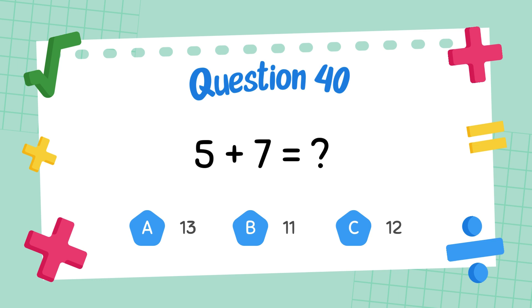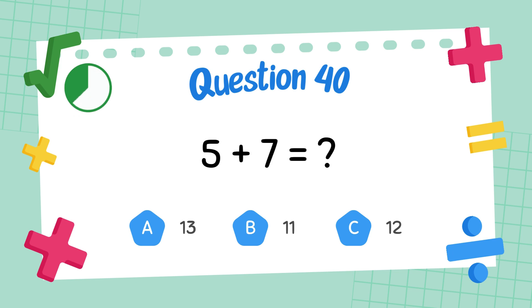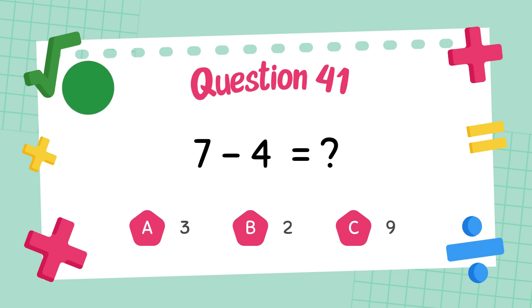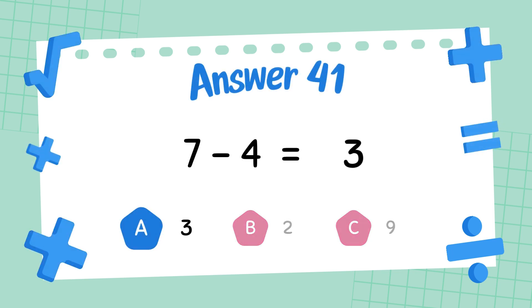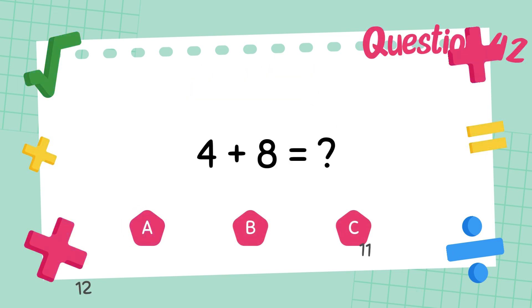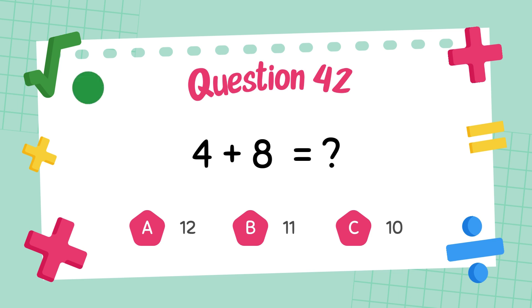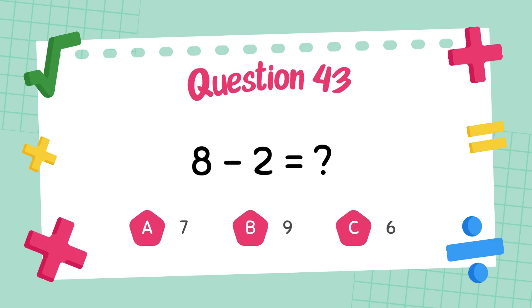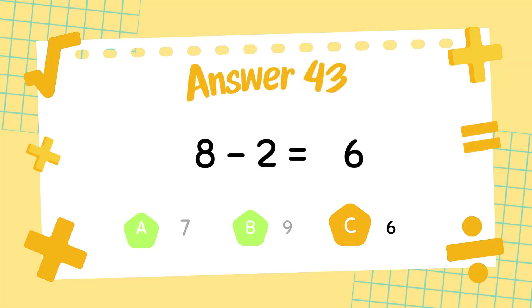What is 5 plus 7? What is 7 minus 4? The answer is 3. What is 4 plus 8? The answer is 12. What is 8 minus 2? The answer is 6.